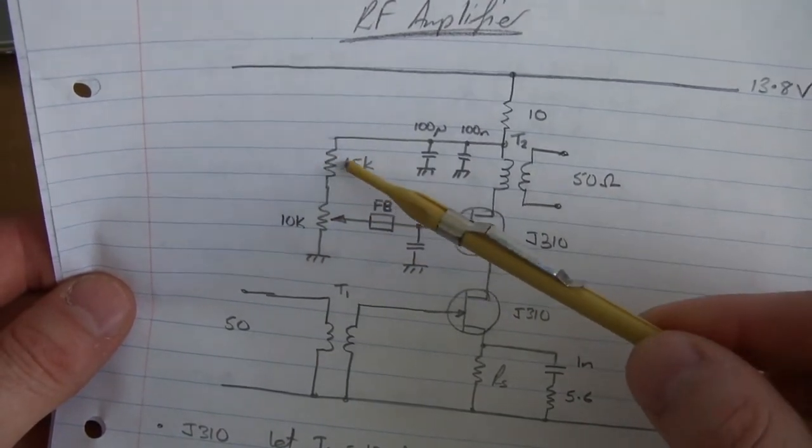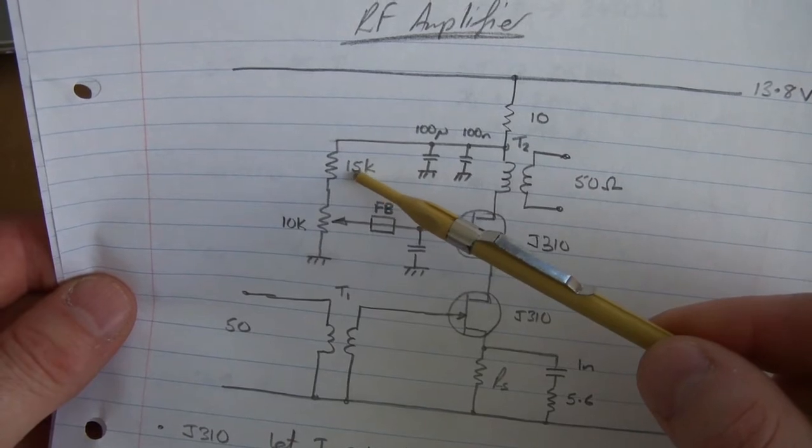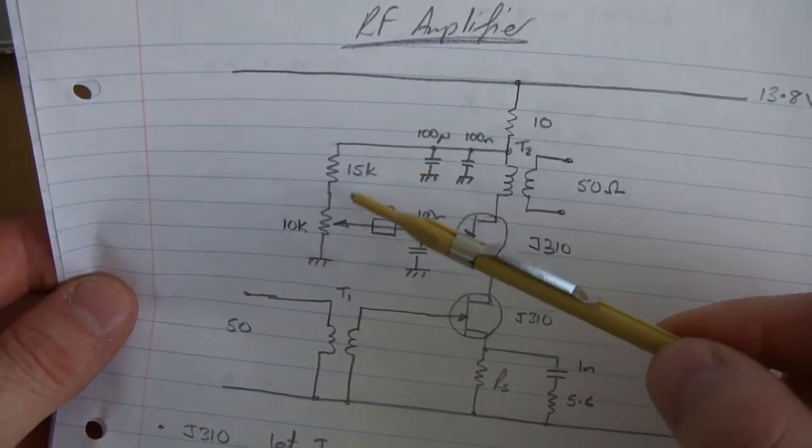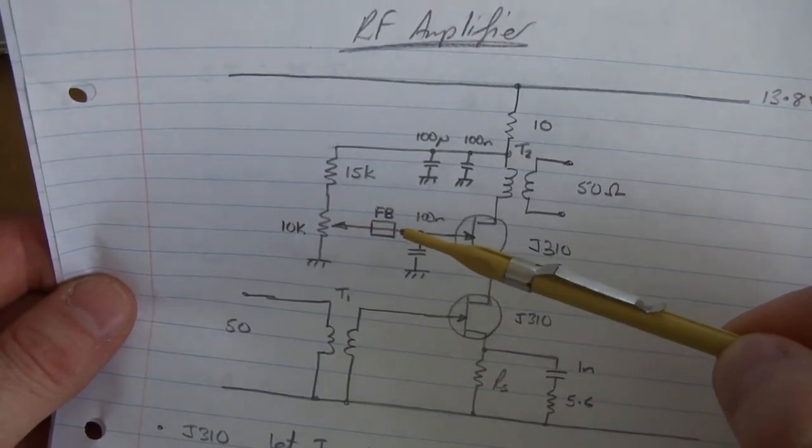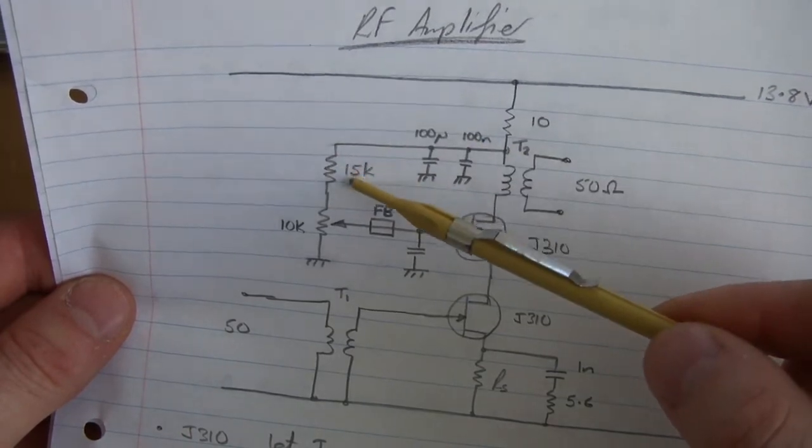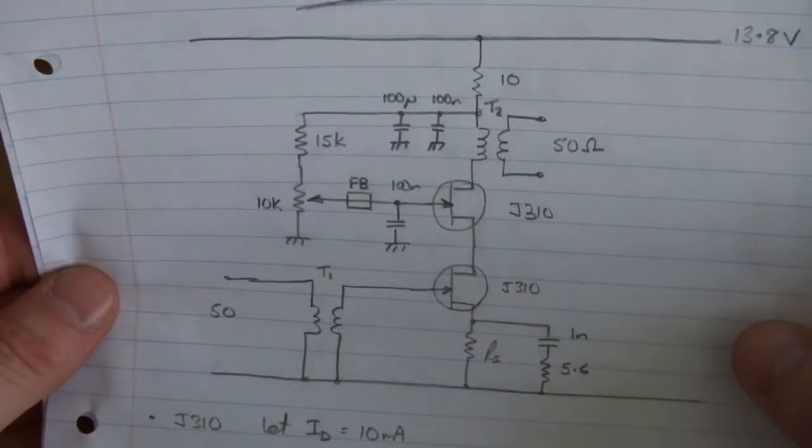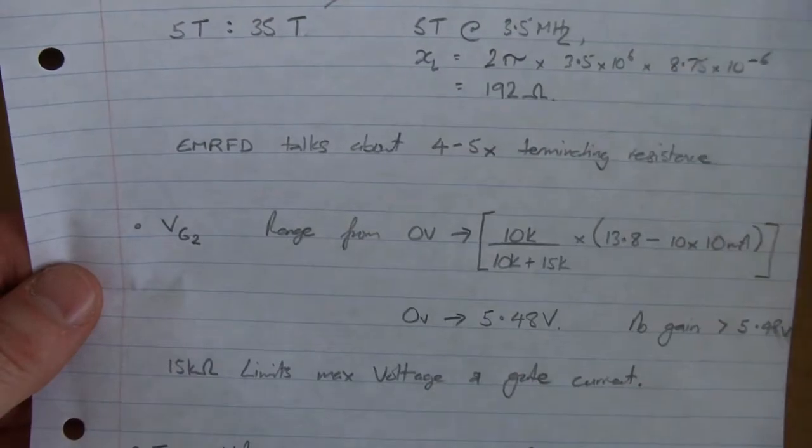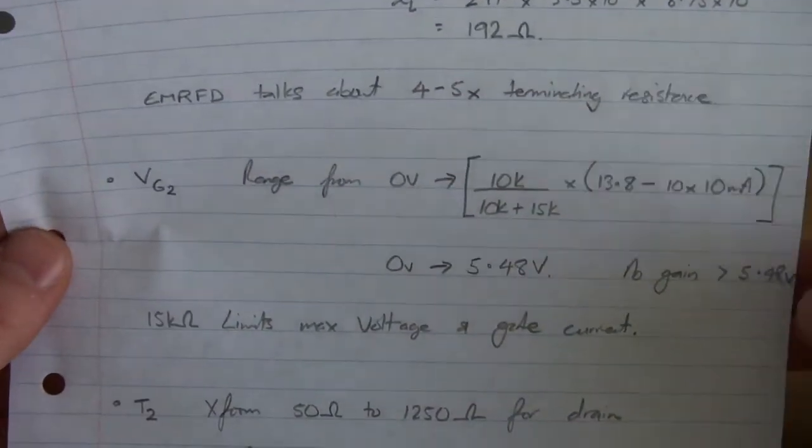In this particular case, I've omitted that because I've got 15k here. So either way, if I was to have current flowing through here from here, it would have to go through that resistor. So I'm quite happy to use that as a pseudo gate resistance there.